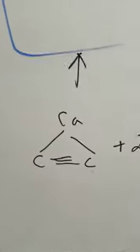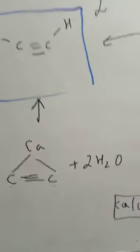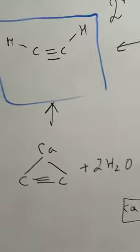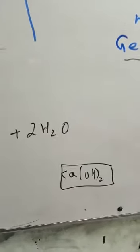There is also another method. This product is called calcium carbide. When we react with this water, so alkyne is made. And calcium hydroxide is made. We also call it slaked lime.